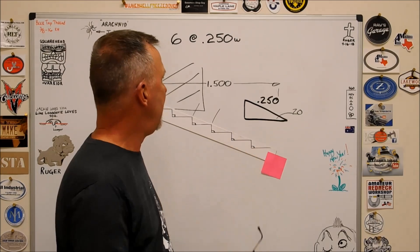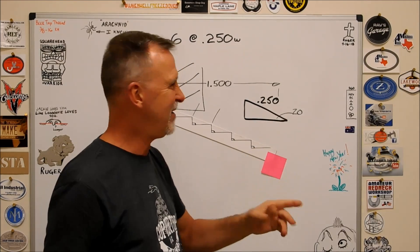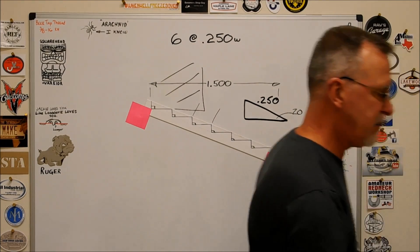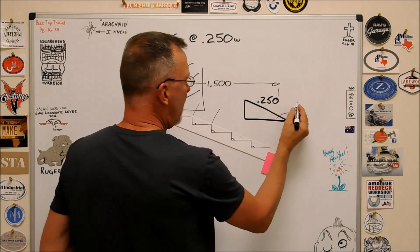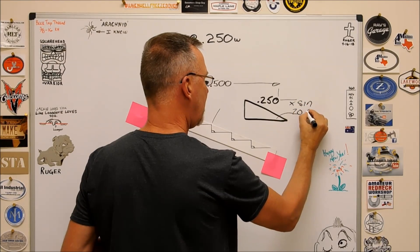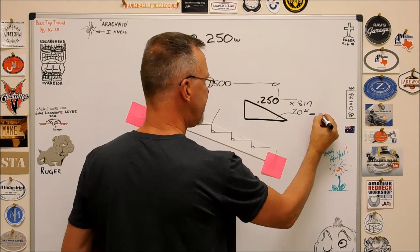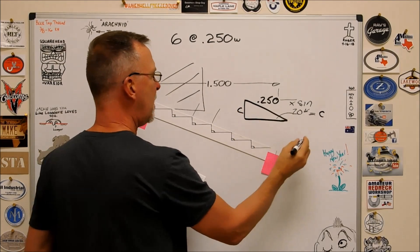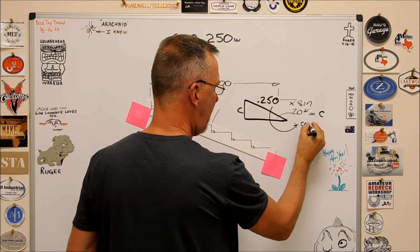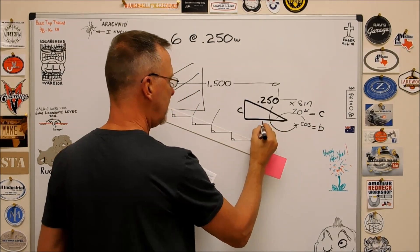Now on a triangle like this, in order to figure out the other two legs, if you have the hypotenuse and the base angle, well I got my notes right here, and I'm just going to tell you how to do it. 250 times the sine of 20 degrees equals C, and this is C over here. 250 times the cosine of 20 degrees equals the base, right here.